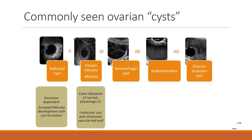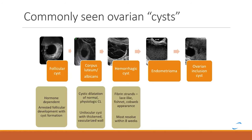The corpus luteum develops after ovulation and has the function of maintaining the early pregnancy. It has a somewhat thick wall, is quite vascular, and that's the typical appearance we'll see on sonography.